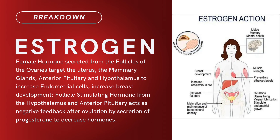Compound term: estrogen. Brief definition: female hormones secreted from the follicles of the ovaries, targeting the uterus, the mammary glands, anterior pituitary, and hypothalamus to increase endometrial cells and increase breast development. Follicle-stimulating hormones from the hypothalamus and anterior pituitary act as negative feedback after ovulation by secretion of progesterone to decrease hormones.